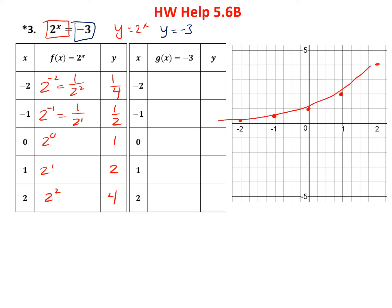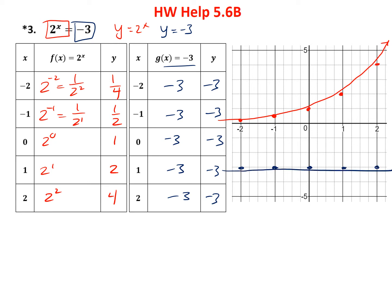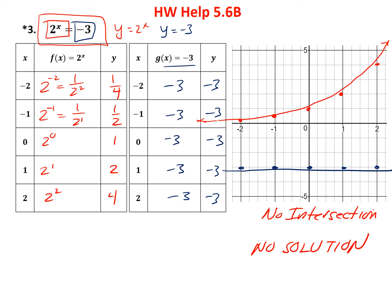Now, on the other side we have the constant equation y equals minus 3, which is always minus 3. Notice where this graphs — it's a horizontal line below zero. The exponential function never goes below zero, so the two graphs will never intersect. Therefore, there is no solution. You can also see this directly from the equation: you cannot multiply twos and ever get a negative number — that is simply impossible. So the answer to this one is no solution.